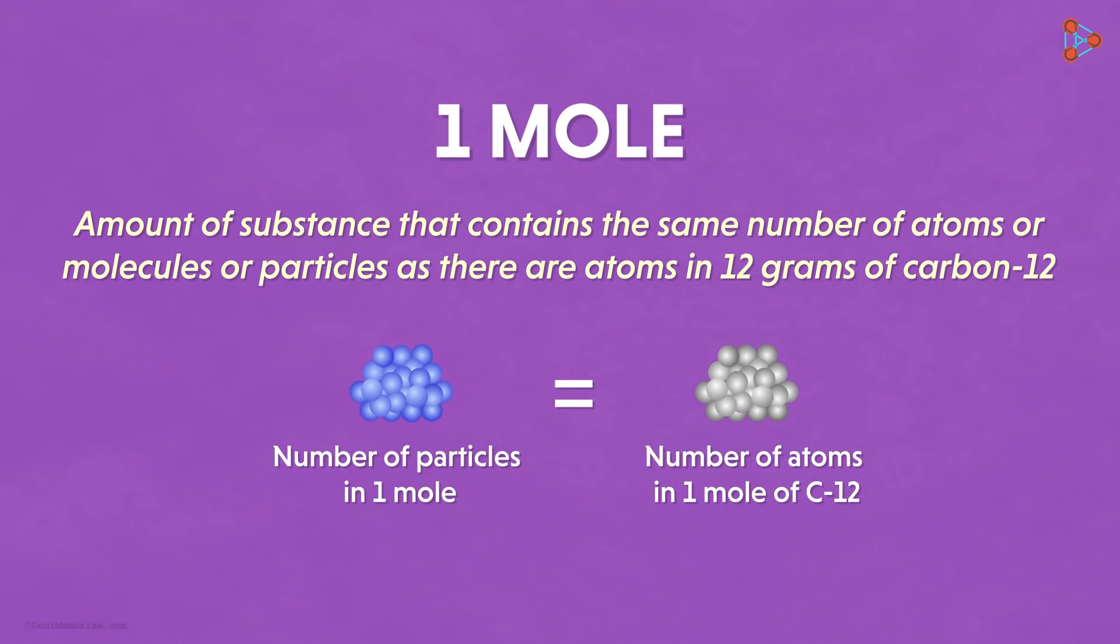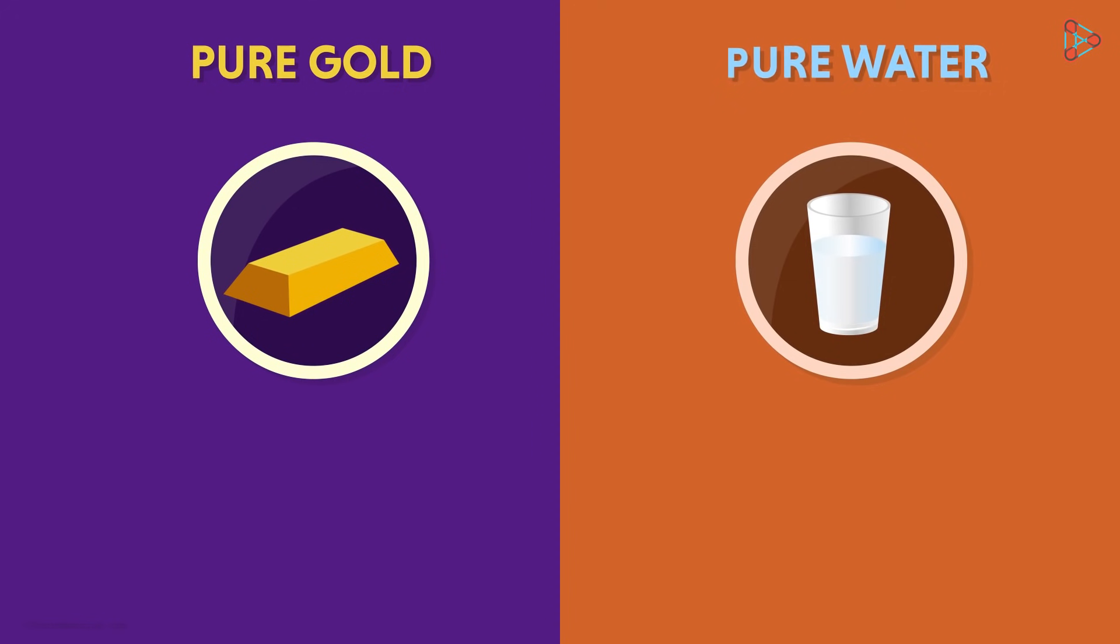Many people get confused when it comes to the concept of mole. Let's take many more examples to be absolutely sure. How about taking the same example of pure gold and pure water? When we say one mole of pure gold, then according to our definition, it will have the same number of atoms as the number of atoms in 12 grams of carbon-12. That means one mole of gold will have 6.022 times 10 raised to 23 atoms of gold.